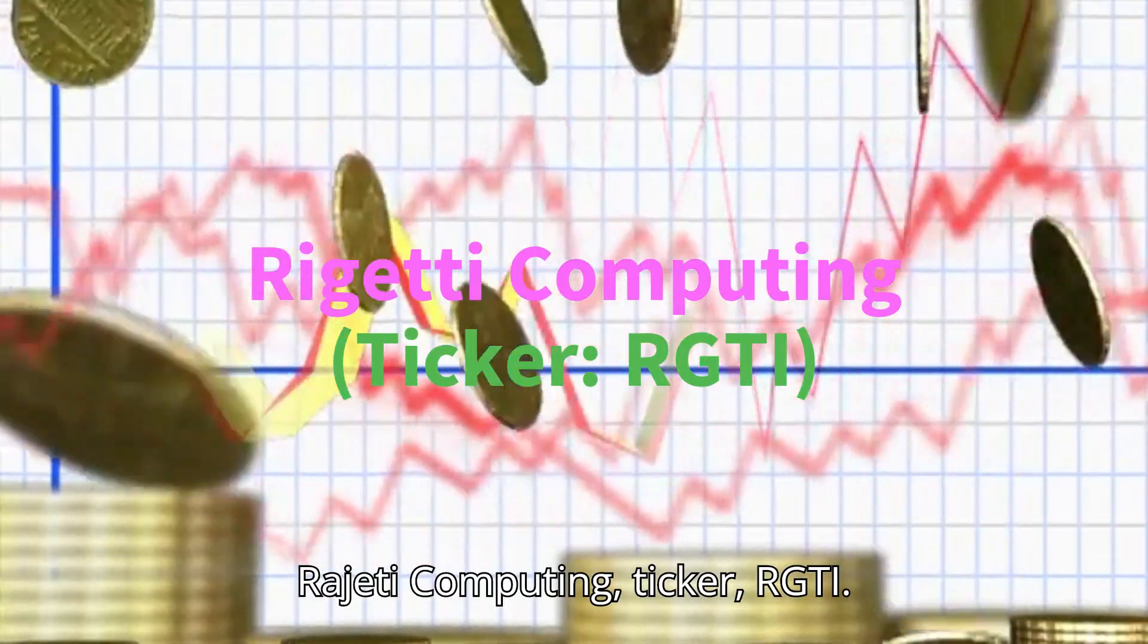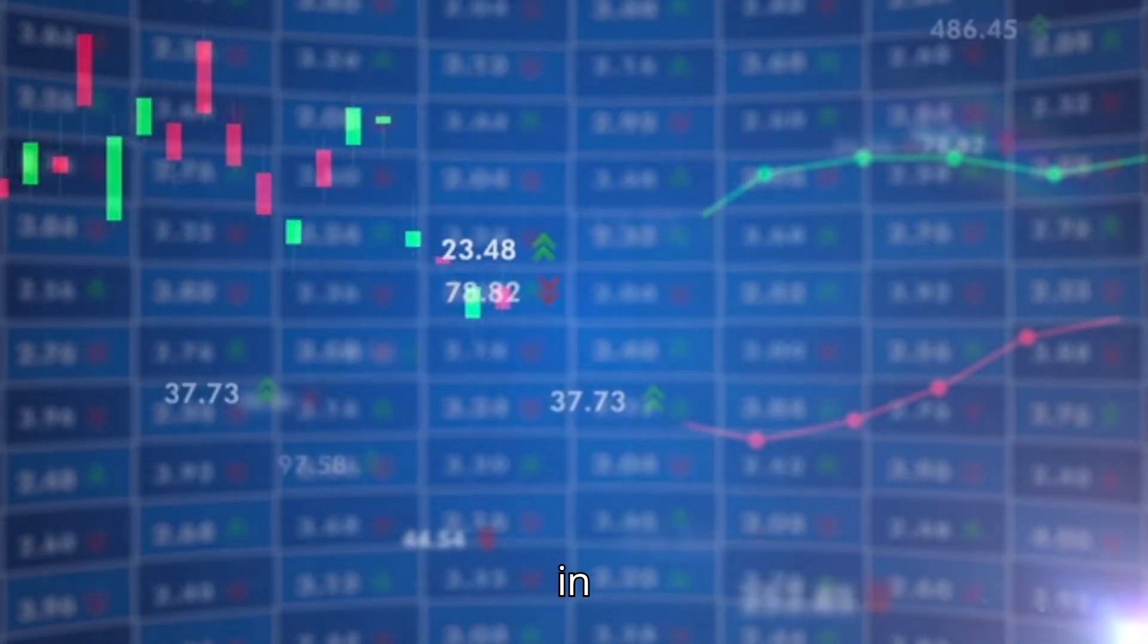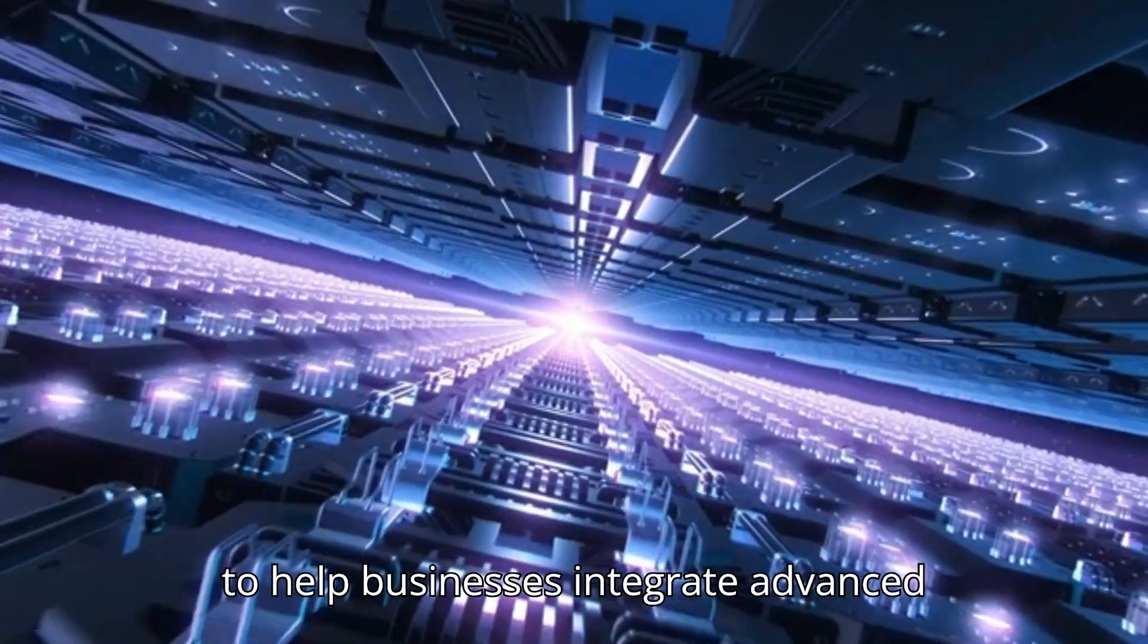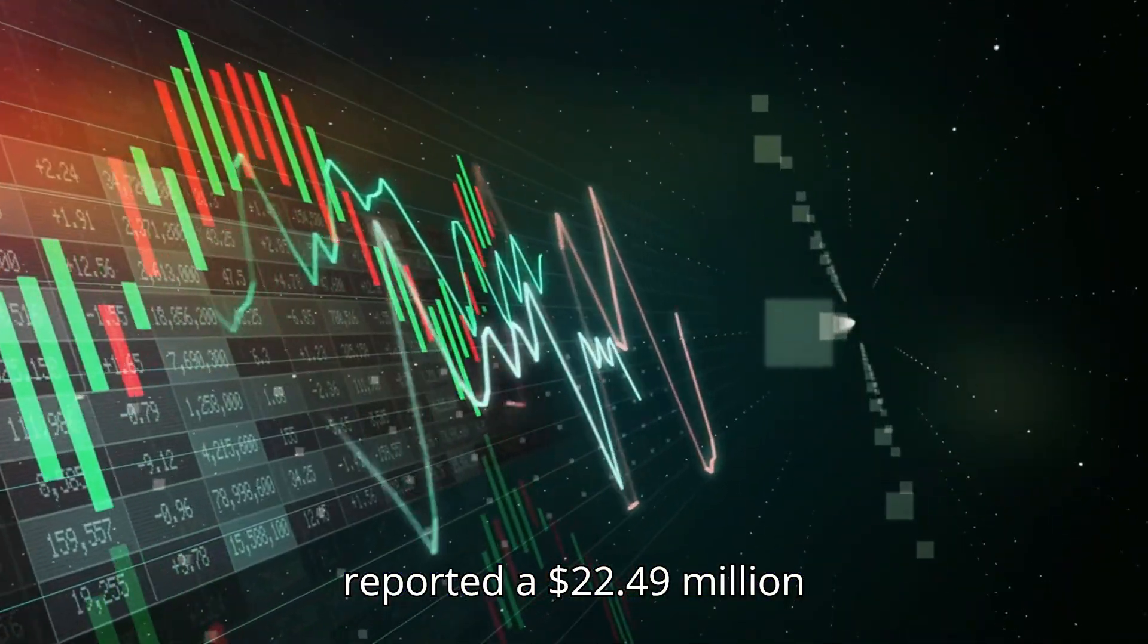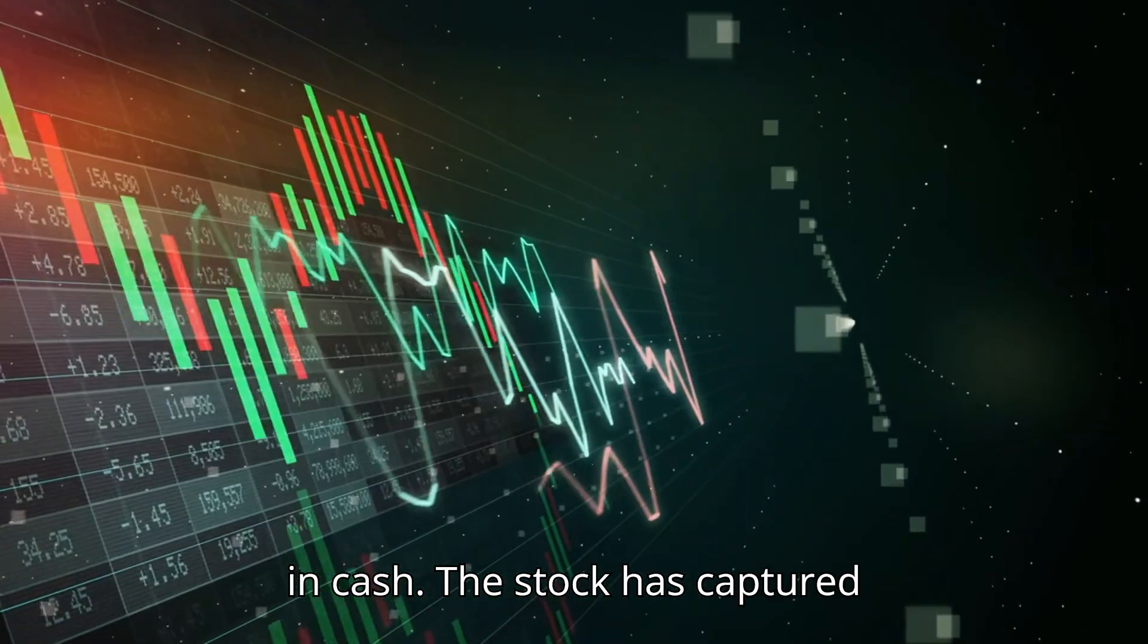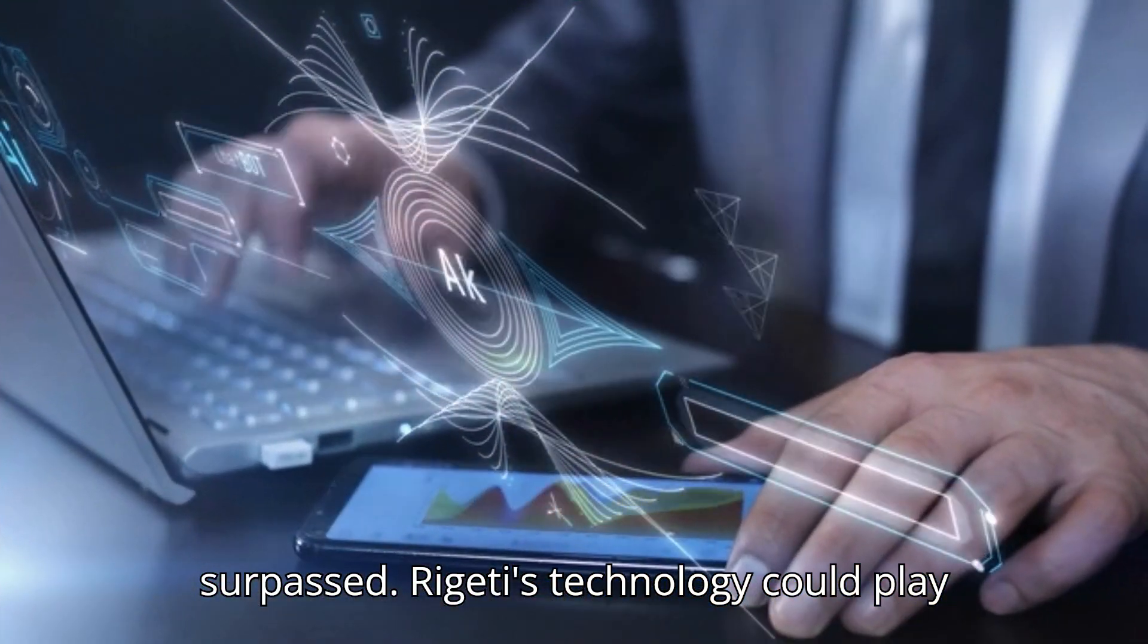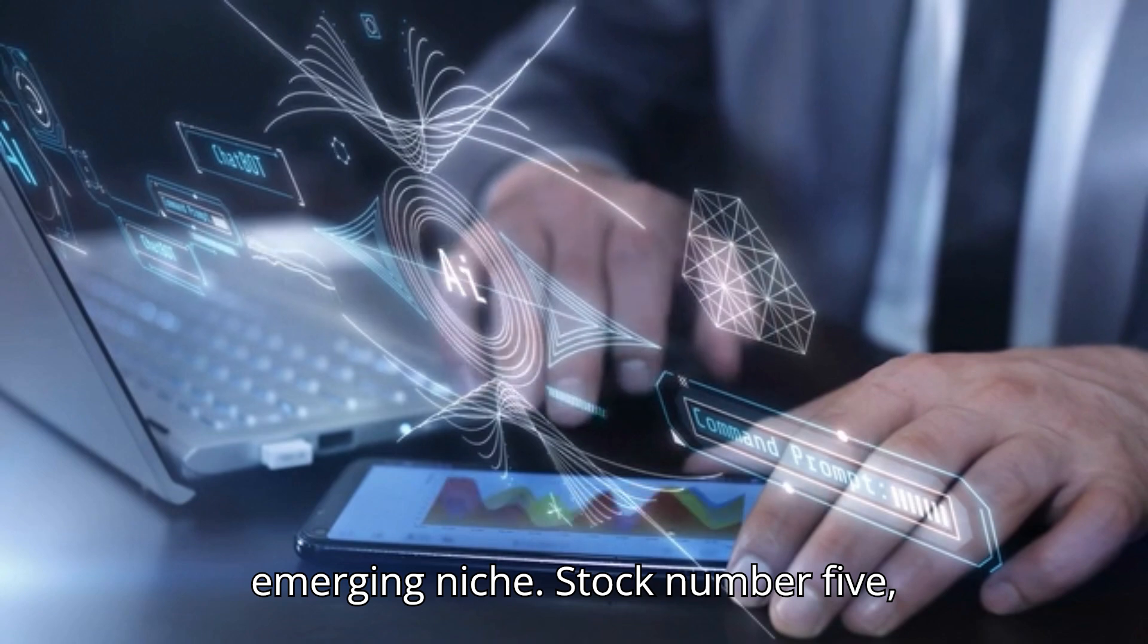Stock number 4: Rigeti Computing, ticker RGTI. Next, let's discuss Rigeti Computing, which has been an absolute star performer, surging almost 1,900% in 2024. Known for its innovative quantum integrated circuits, Rigeti combines quantum and classical computing to help businesses integrate advanced systems seamlessly. While Rigeti faces financial challenges—it reported a $22.49 million debt with only $20.29 million in cash—the stock has captured attention. Analysts, including Craig Hallam, are optimistic with a $12 price target, which the stock has already surpassed. Rigeti's technology could play a crucial role in building hybrid quantum systems, positioning it as a leader in this emerging niche.